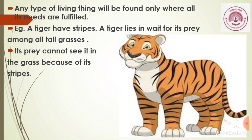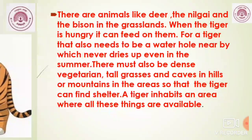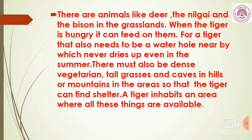Any type of living thing will be found only where all its needs are fulfilled. Let us see this through an example of a tiger. A tiger has stripes and lies in wait for its prey among tall grasses — its prey cannot see it because of its stripes. There are animals like deer, nilgai, and bison in the grassland for it to feed on. A tiger also needs a water hole nearby that never dries up, dense vegetation, tall grasses, and caves in hills or mountains for shelter. A tiger inhabits an area where all these things are available.